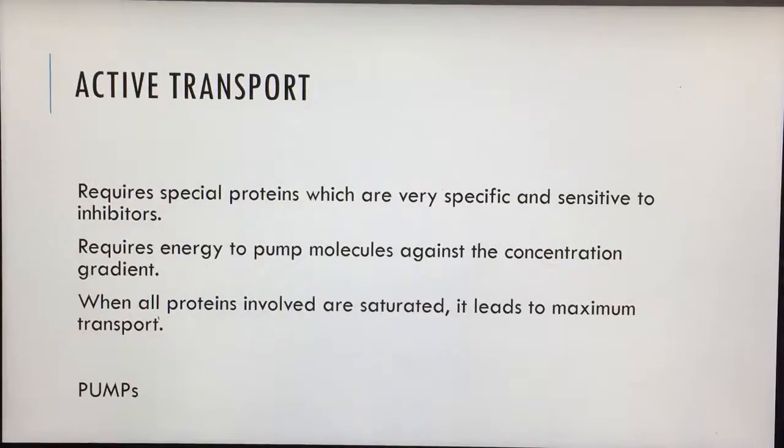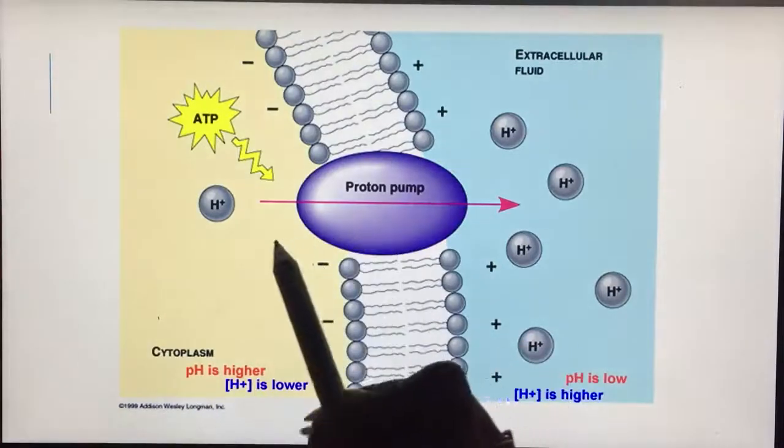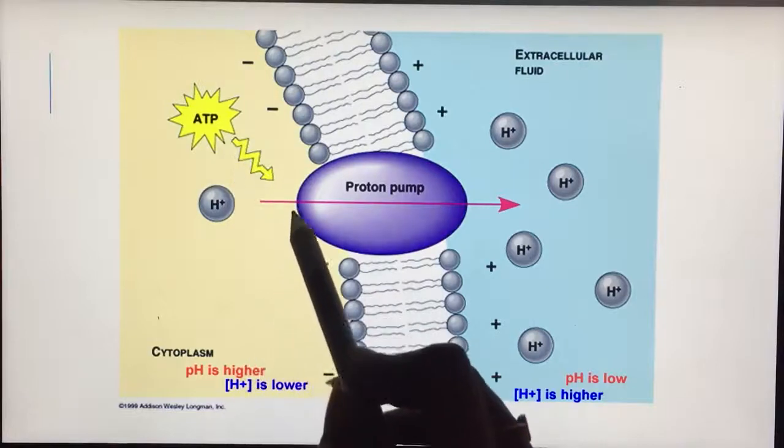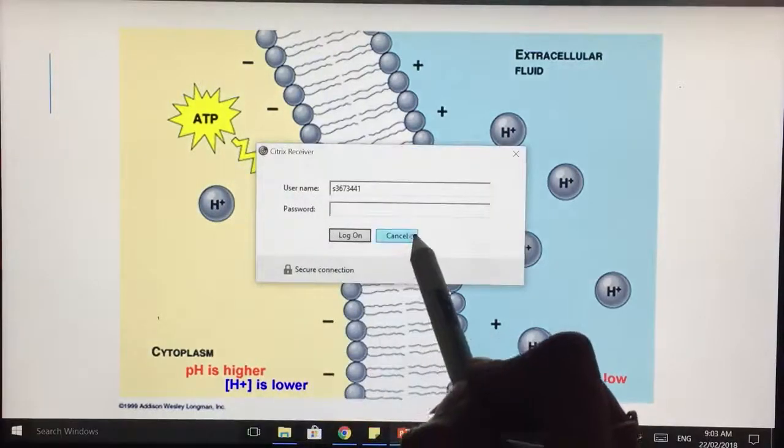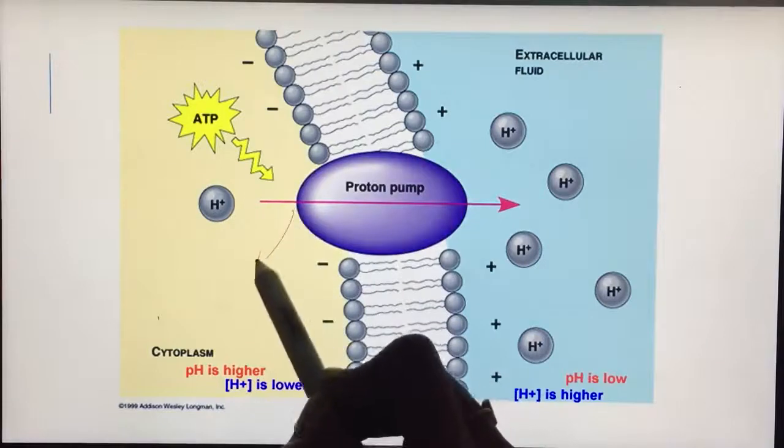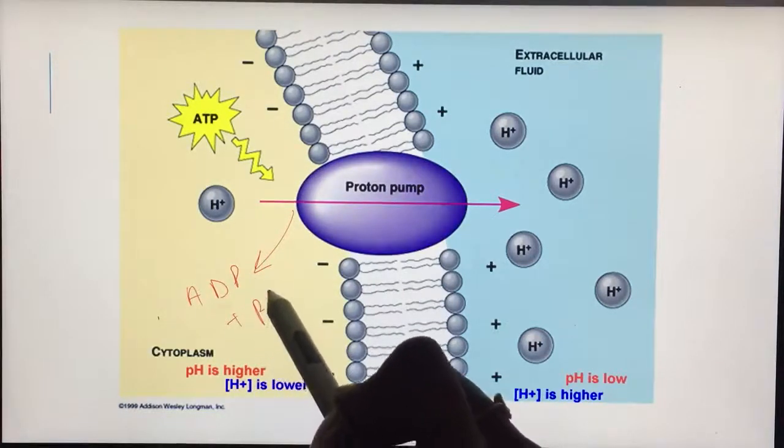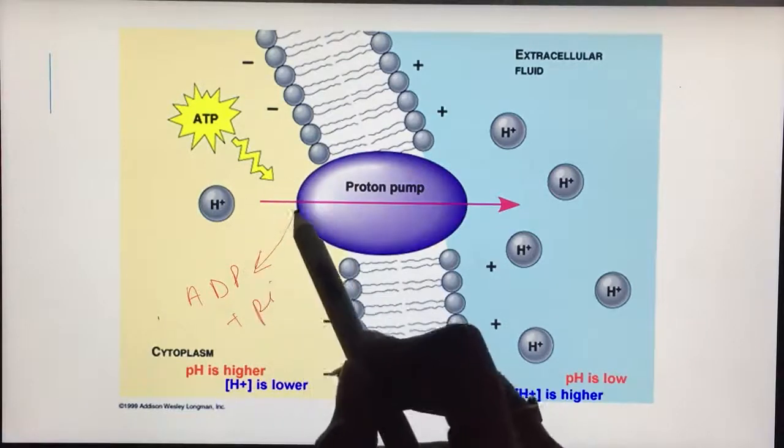Let's take a look upon active transport. It is very sensitive and highly specific and this requires proteins for transfer. The most common example for active transport would be pumps. ATP is the energy molecule in biological systems. It gives energy to proton pumps and this breaks into ADP and inorganic phosphate and this breakage releases some energy.